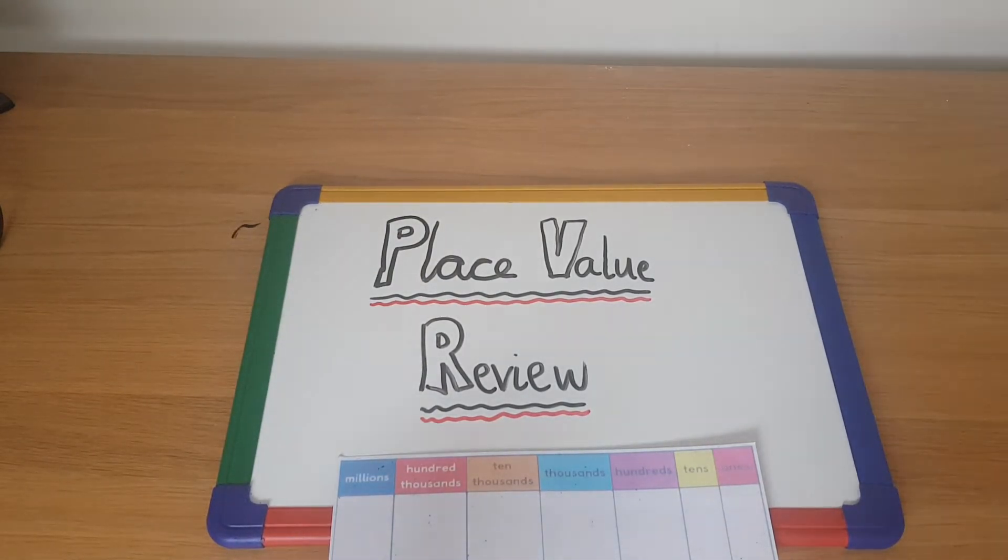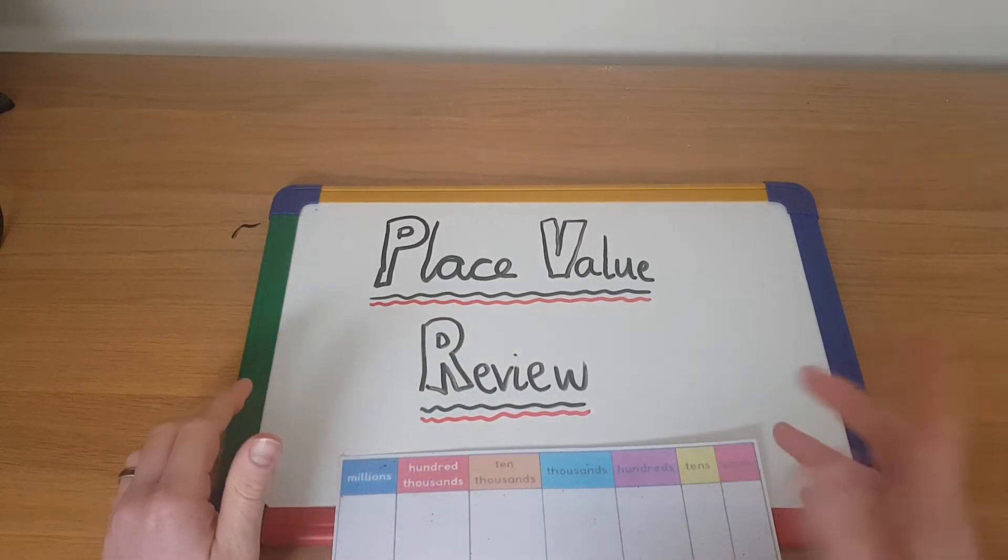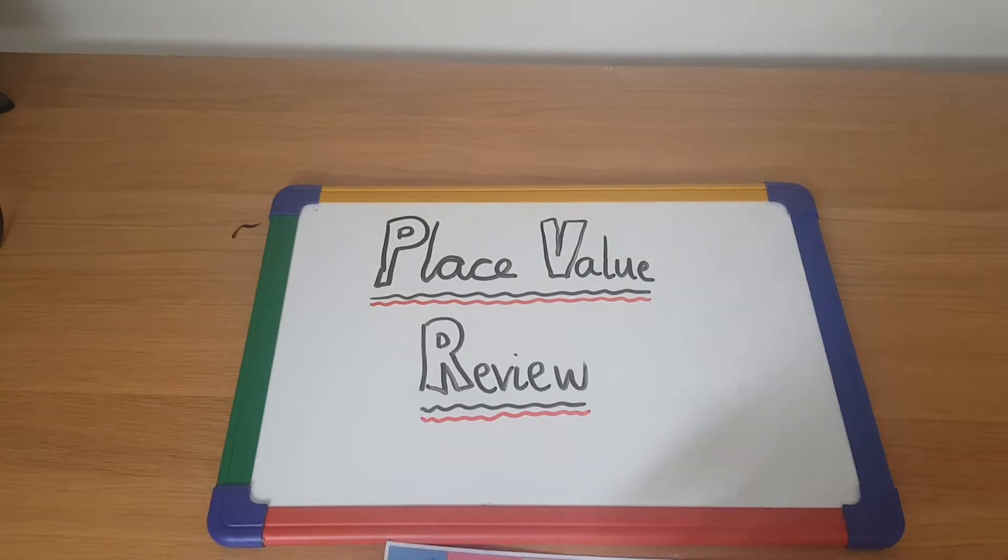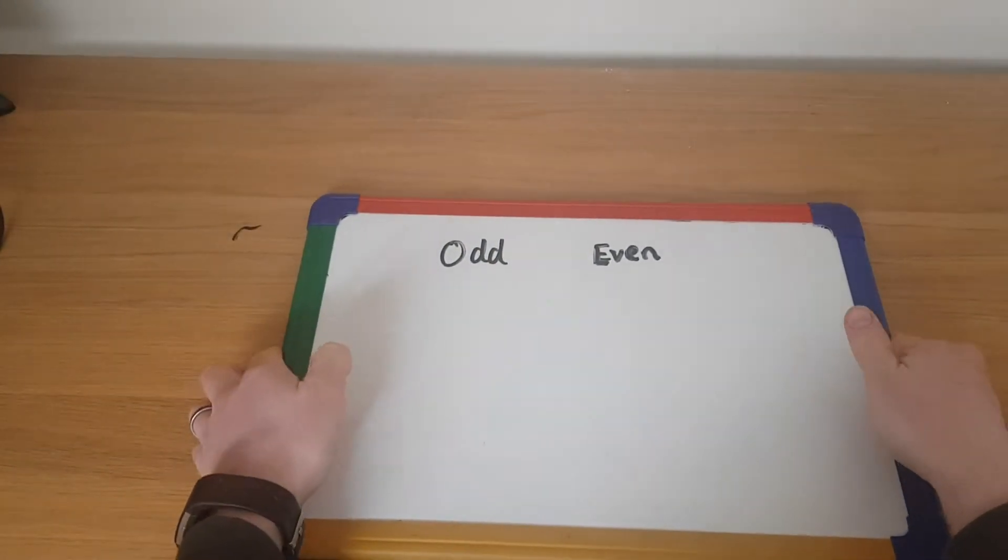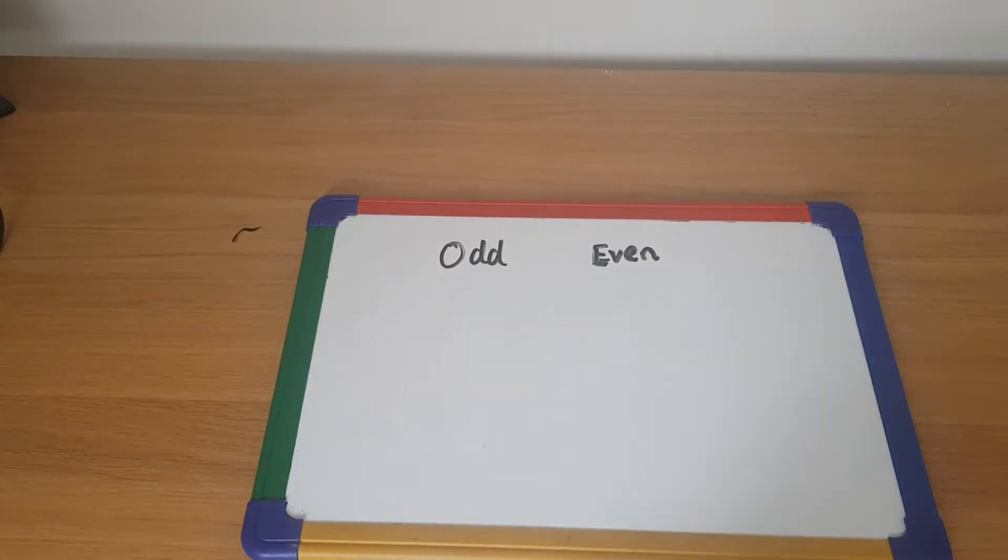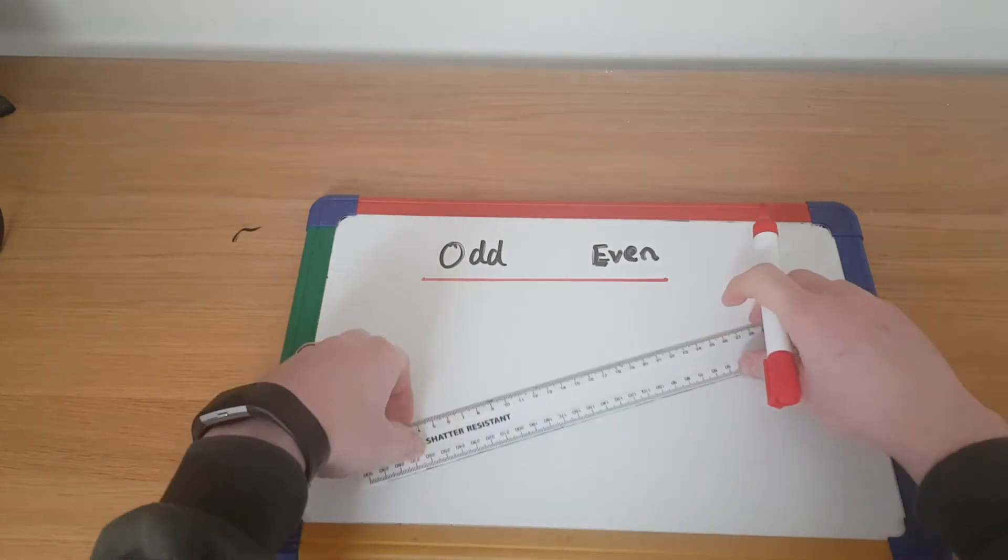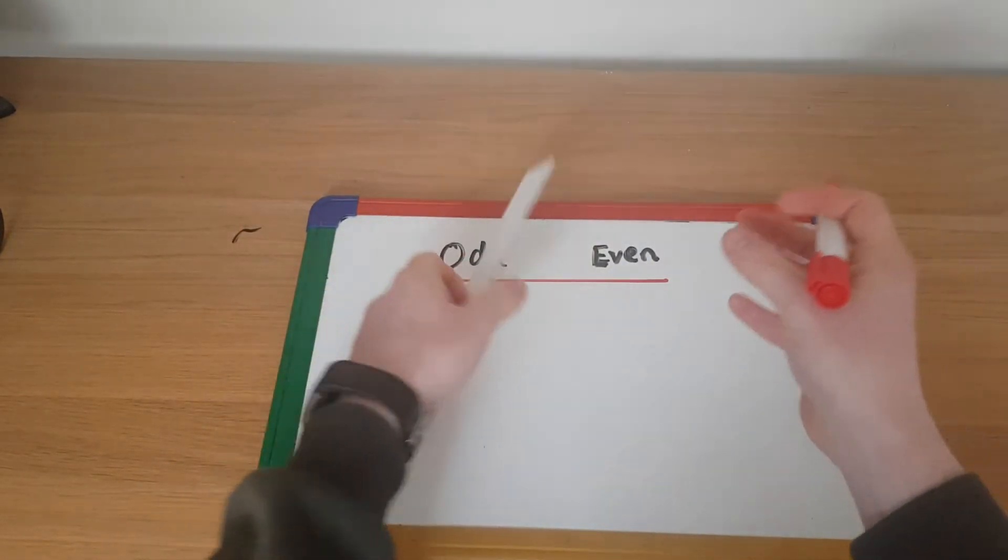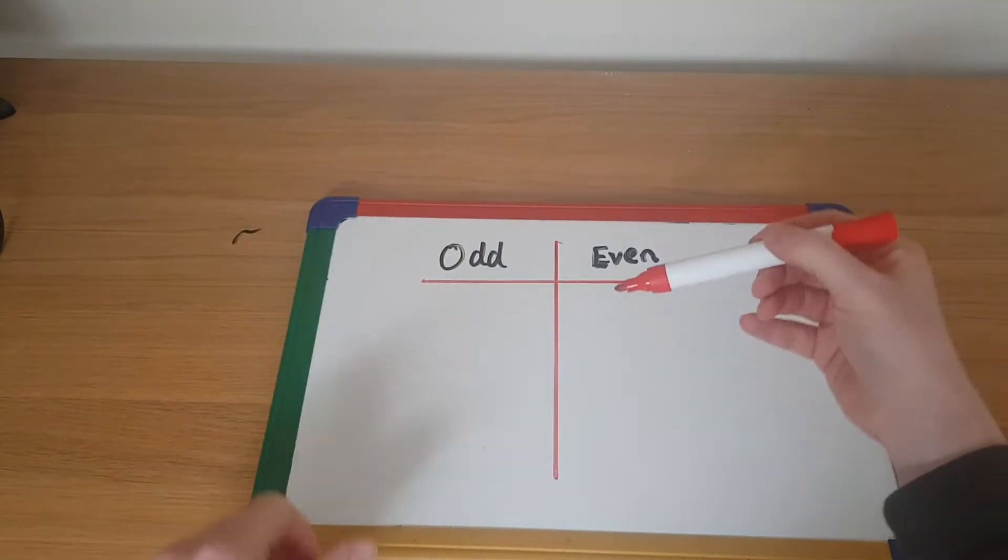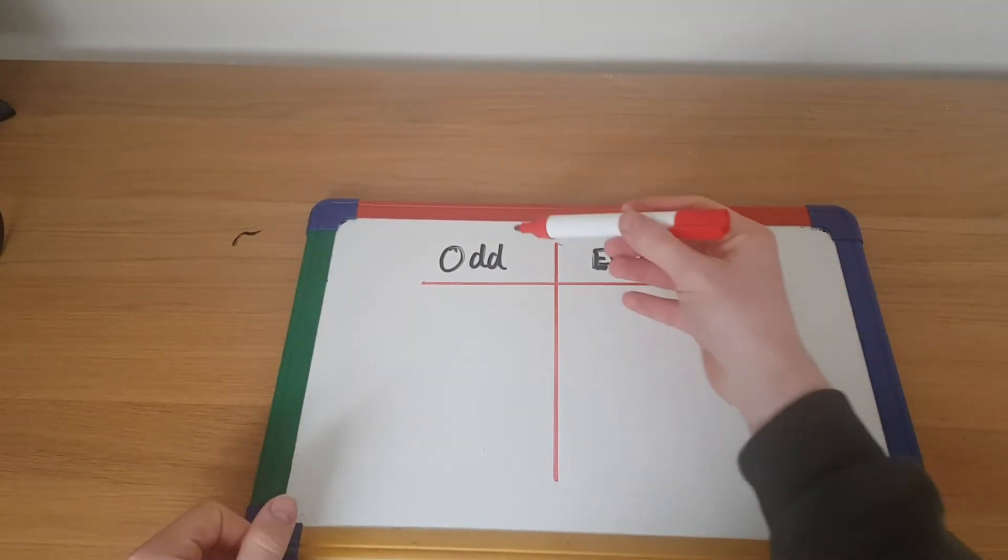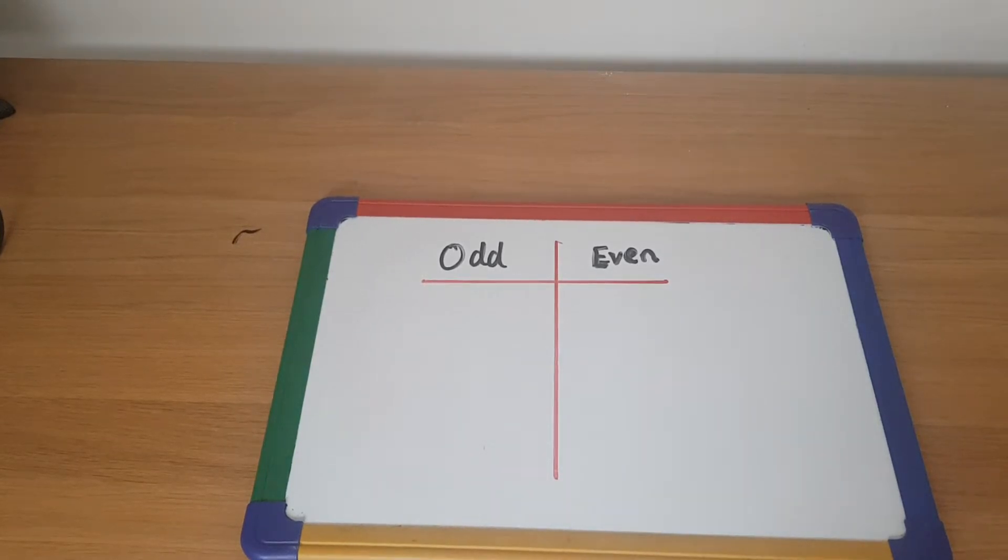Right, so to start off with then, place value. I've got myself a place value mat today to go through this but just a quick recap as well that we need to sort of think about are odd and even numbers. So if you set out on your little piece of paper, just a little table that looks like this, and just give yourself a few seconds, pause the video and just write down all the even numbers and all the odd numbers that you can.